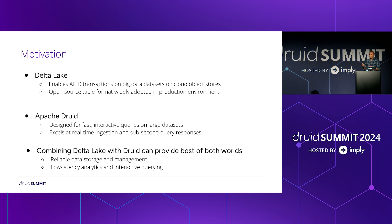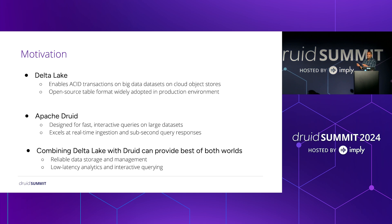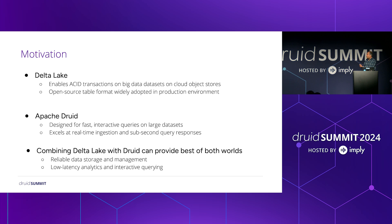Delta Lake is an open source project and has been widely used in production environments by more than 10,000 companies. About Druid — most of you already know what Druid is. It is good at interactive queries on large datasets and enables real-time ingestion with fast query responses. By combining Delta Lake and Druid, you get the best of both: reliable data management from Delta Lake, and interactive query with low latency responses from Druid, useful for use cases like fraud detection or real-time dashboards.